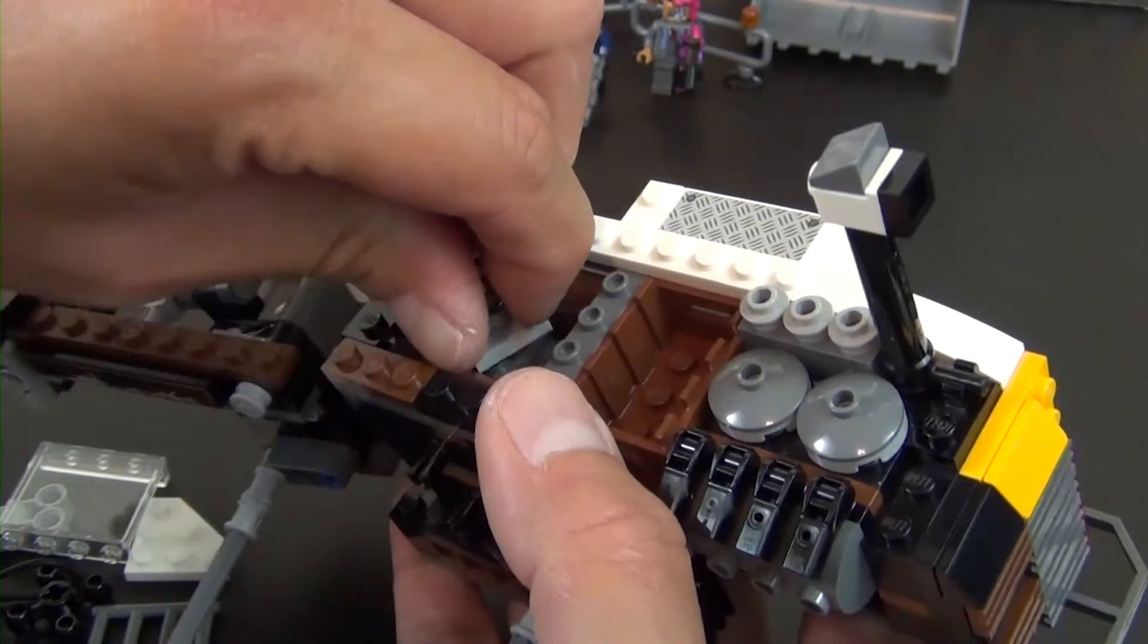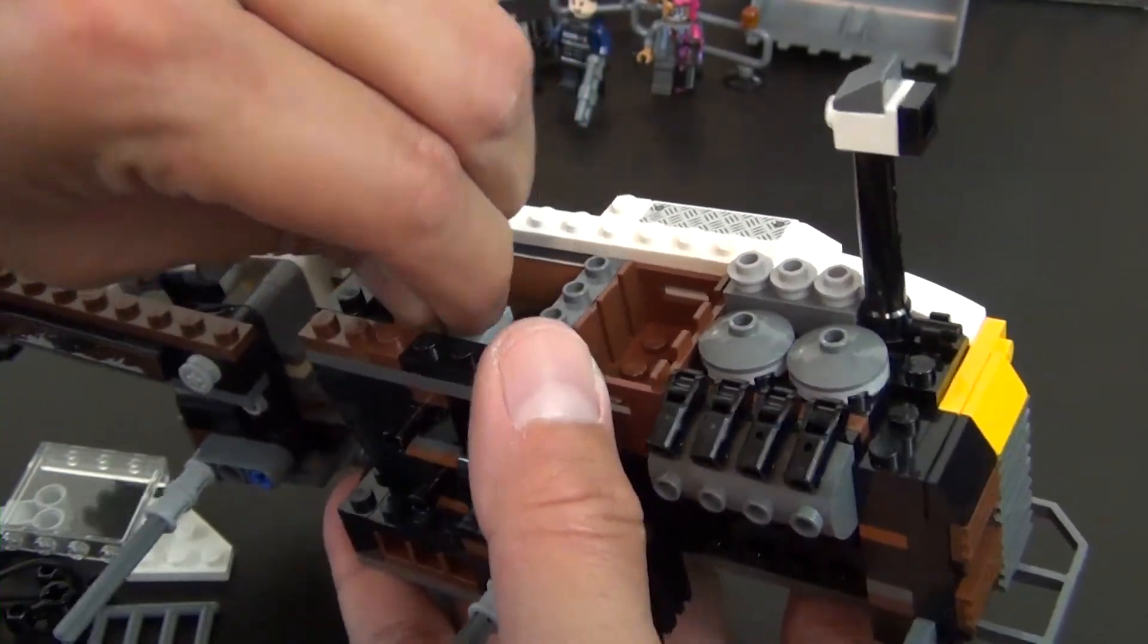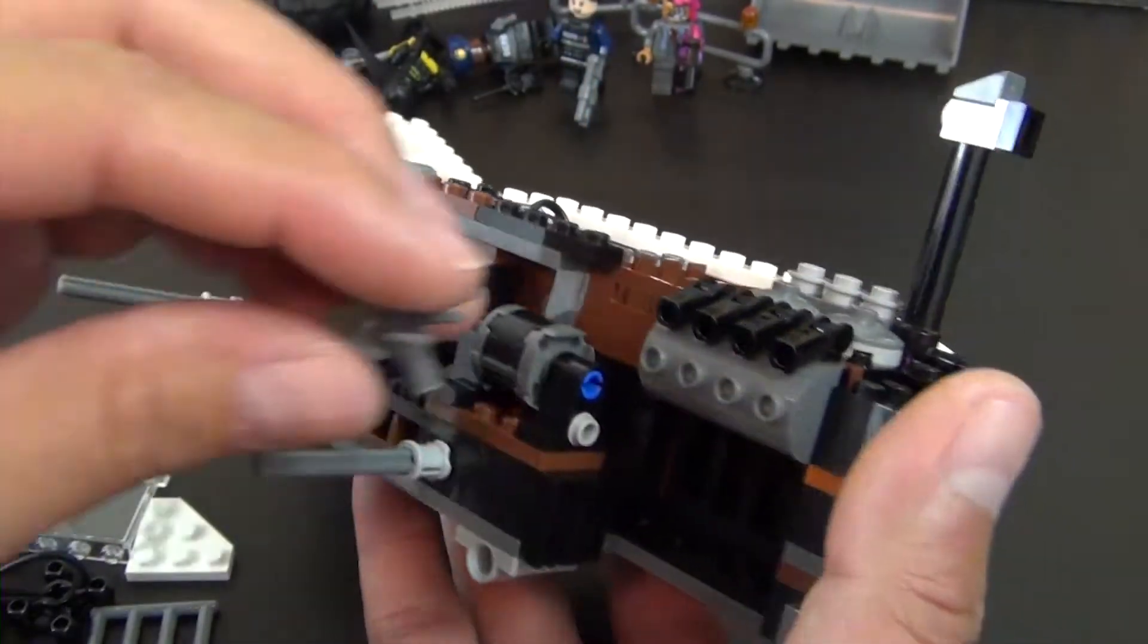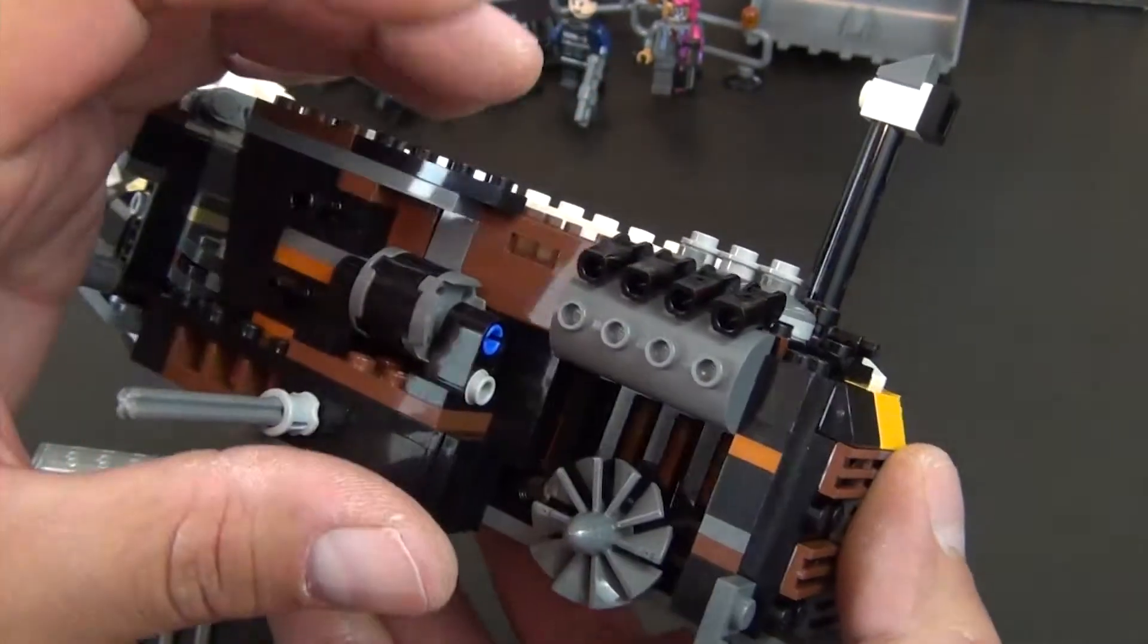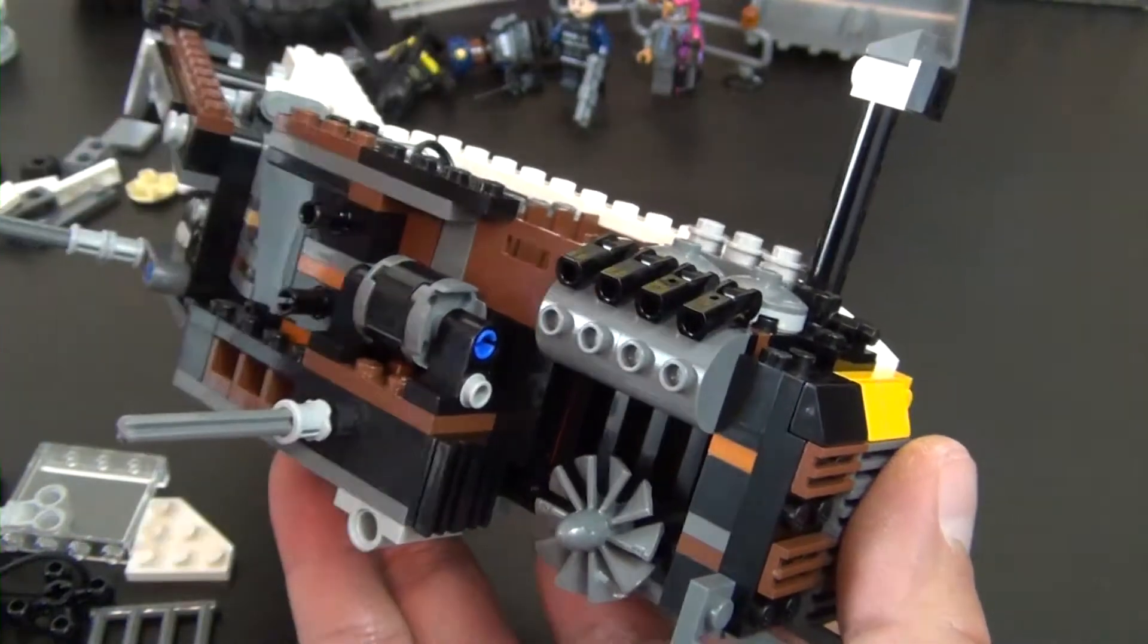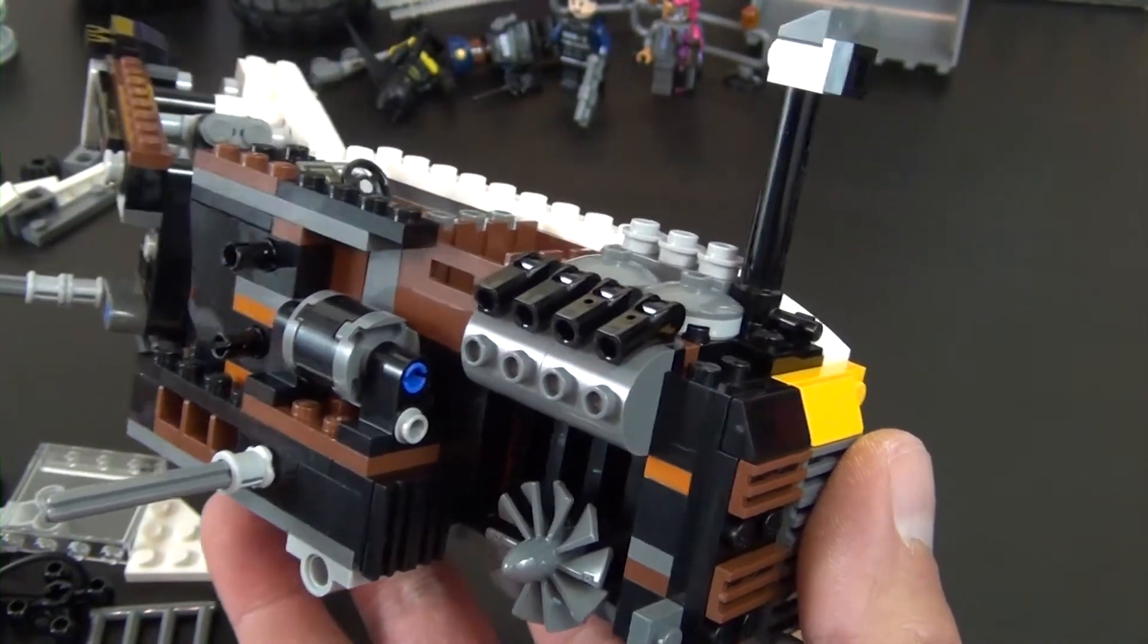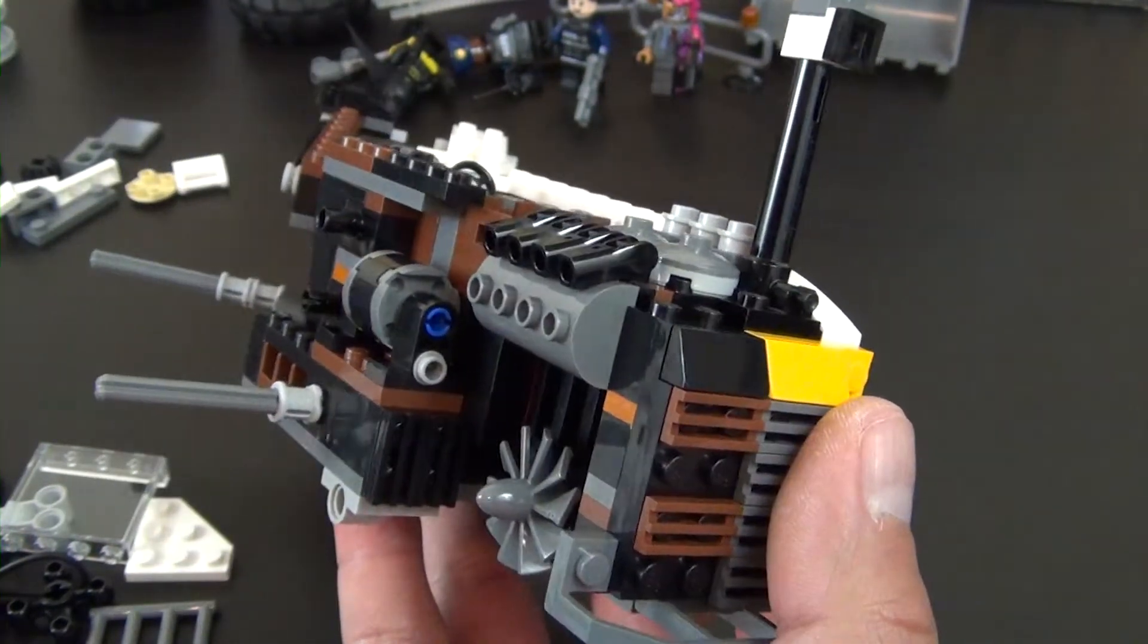Two of the trans red cheese slopes. Tiles going all the way down here and more of the slotted tiles. This piece will attach on the back here, so that finishes off that back piece there.